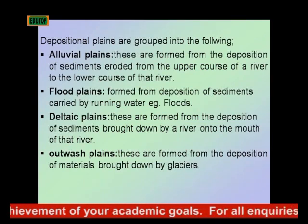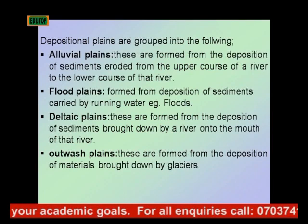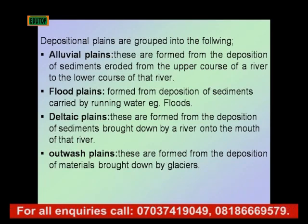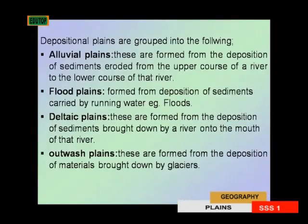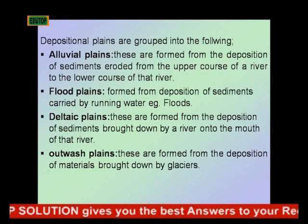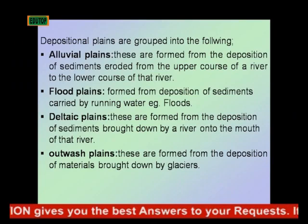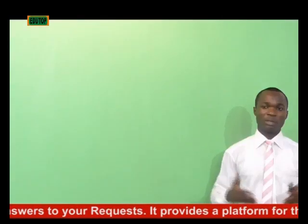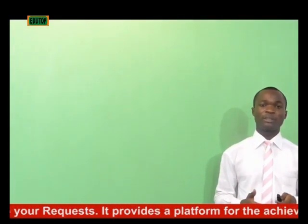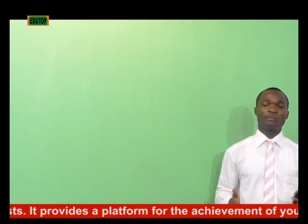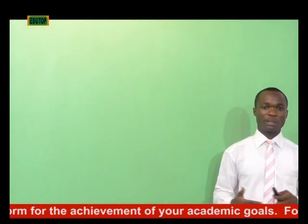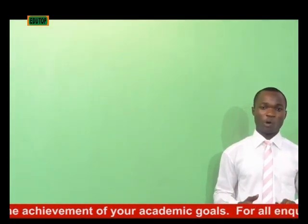River planes are formed from the deposition of sediments that are eroded from the upper course of a river. Flood planes are formed from the deposition of sediments that are carried by running water, for example during floods. When floods occur, there is a high tendency for sediments to be carried and deposited, and over time this forms what we call a flood plane.